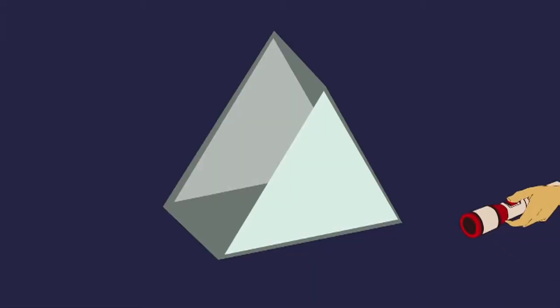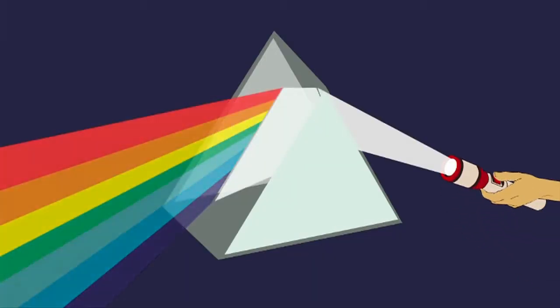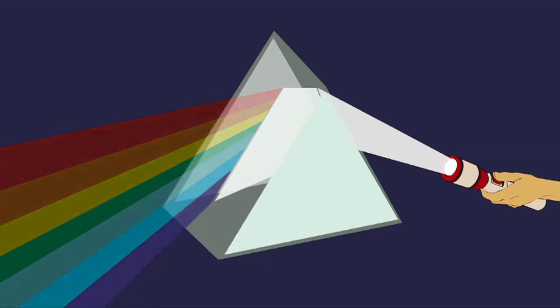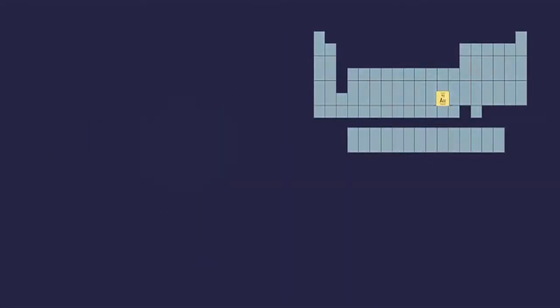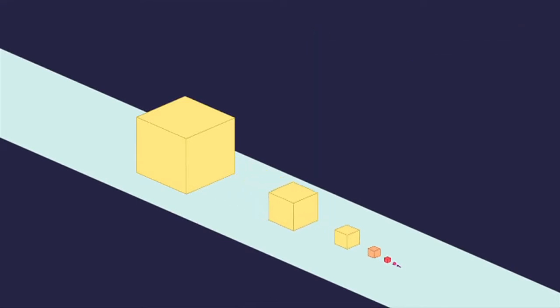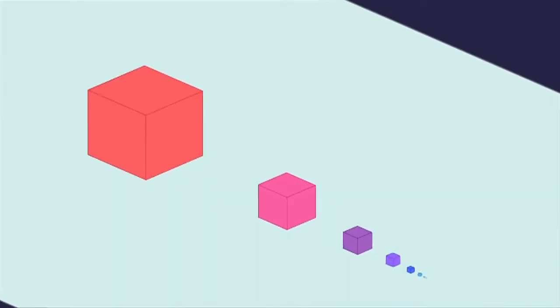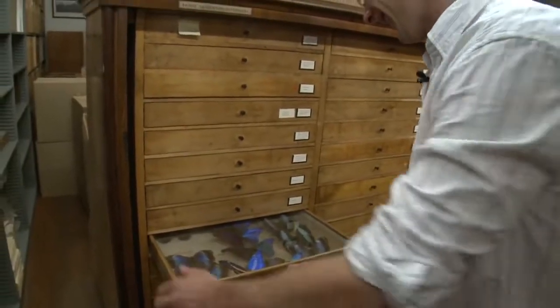Light also behaves differently as you head down to the nanoscale. White light contains all colours. When particles get really small, they start to bounce only certain colours back, so you see them as those colours. As gold gets smaller, it stops looking gold and instead reflects red, purple, blue, and finally becomes invisible when it's too small to reflect any colours of light that you can see. These strange properties of light can be very useful.